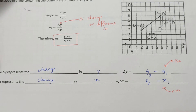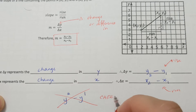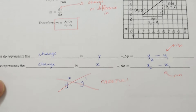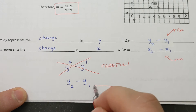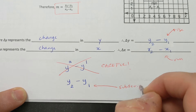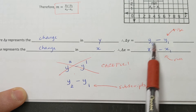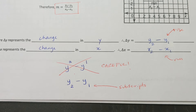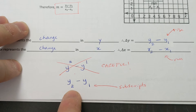When writing y2 minus y1, a lot of students write the numbers as superscripts, which means exponents. That is wrong — those are subscripts. Writing y-squared minus y-to-the-power-of-1 is incorrect; we want the second y value minus the first y value. Make sure to write them as subscripts, because writing exponents is considered incorrect and will cost you marks on an assessment.